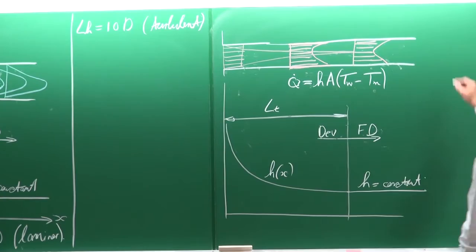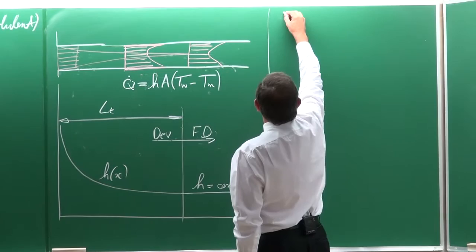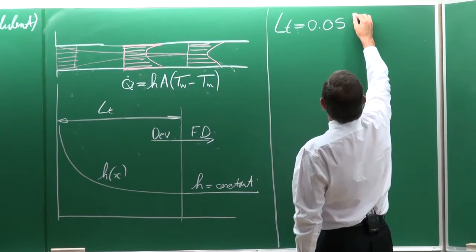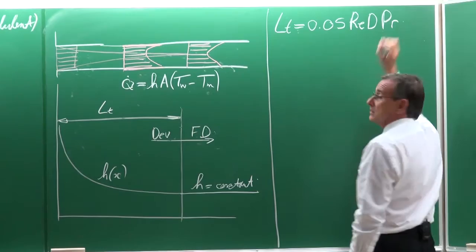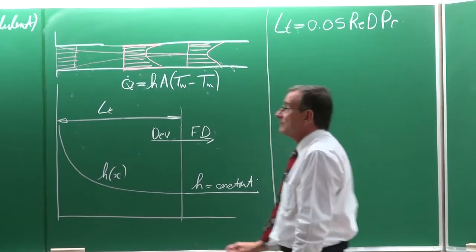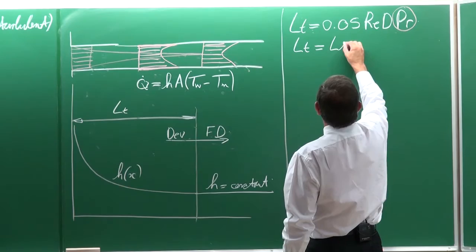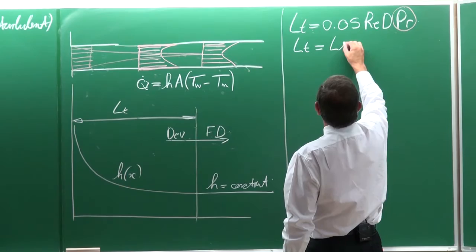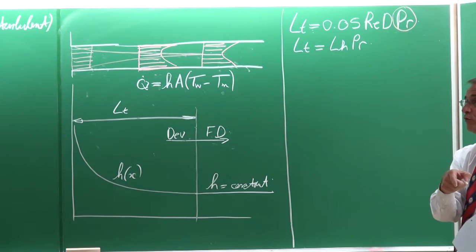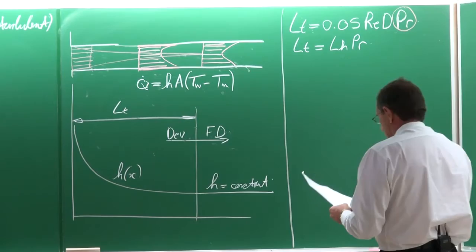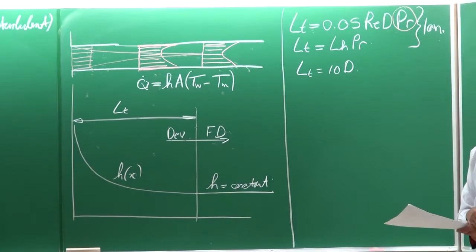The thermal developing length L_T is how long it takes before the flow is thermally fully developed. For laminar flow, L_T equals 0.05 times the Reynolds number times the diameter times the Prandtl number. Comparing with L_H, the only addition is the Prandtl number — so L_T equals L_H times the Prandtl number. For turbulent flow, it is always 10 diameters — the flow is fully developed within 10 diameters.